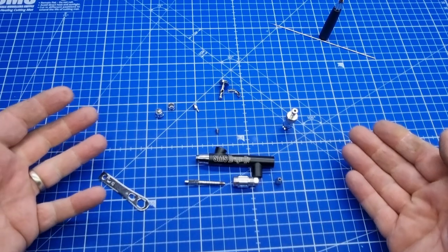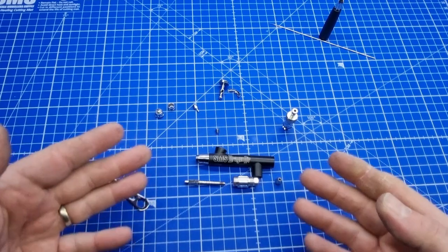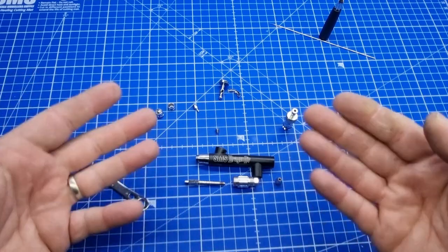So that's a full strip down. What we're going to do now is come back and we'll do the opposite and put it back together.